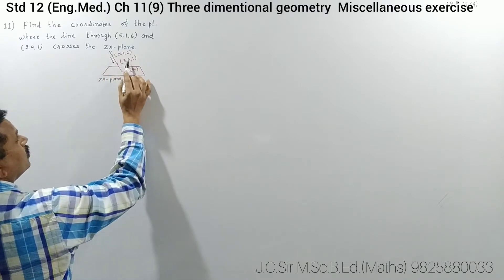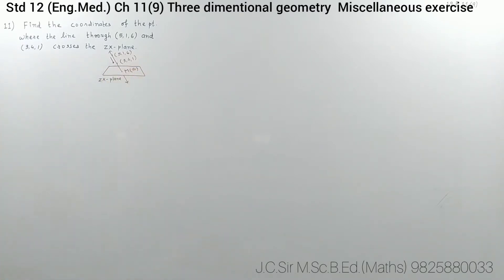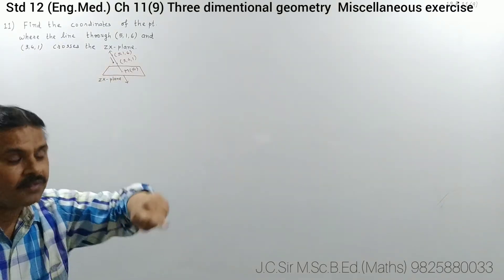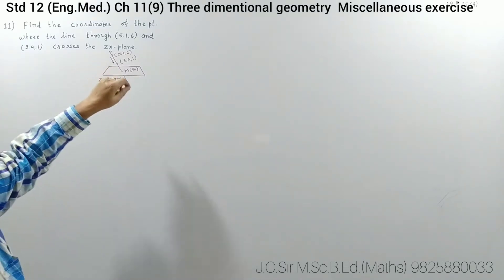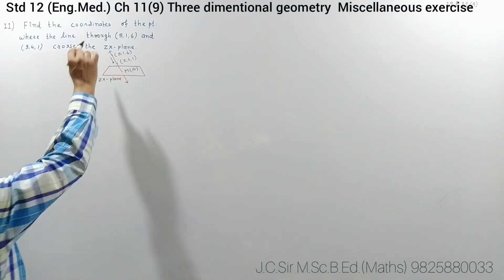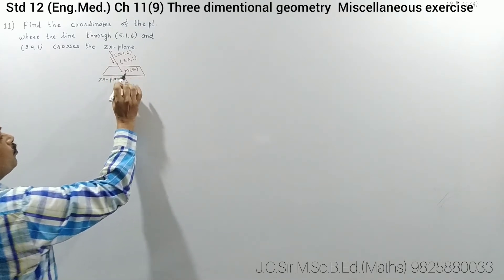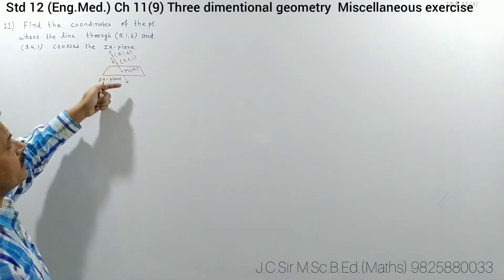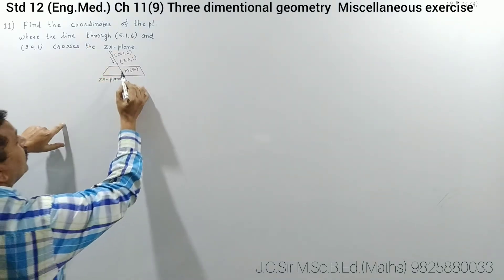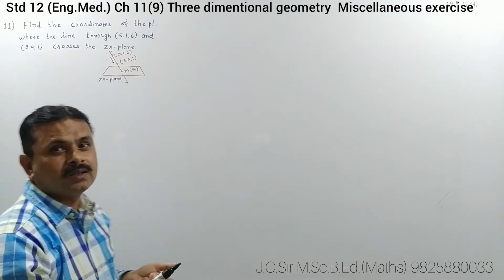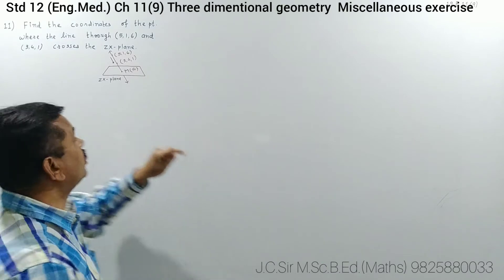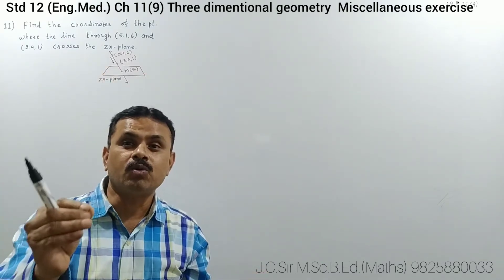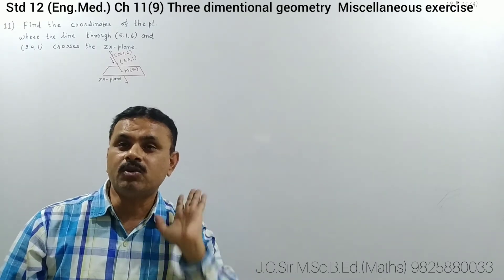The direction is this point minus this point. After that, determine the equation of the line in vector form. In the vector form, you can take the general point. By putting different values of lambda, it will give different points on this line. Suppose for lambda equal to lambda1, it gives point M, which is also on the plane. But the plane is the ZX plane, so its y-coordinate will be 0.